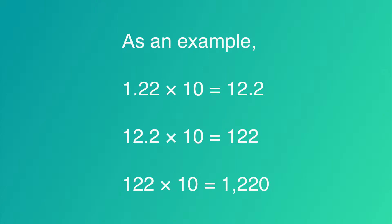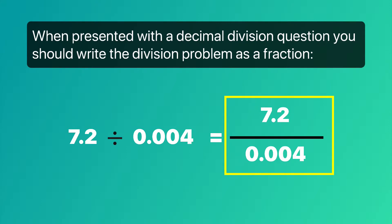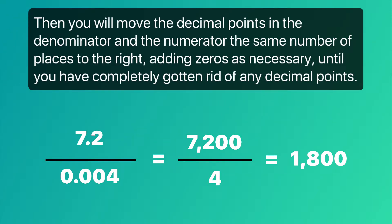Now let's do a problem and show you how this works. When presented with a decimal division question, you should write the division problem as a fraction. Then you will move the decimal points in the denominator and the numerator the same number of places to the right, adding zeros as necessary until you have completely gotten rid of any decimal points.